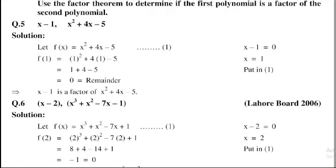Question number 6: x minus 2, and x³ plus x² minus 7x minus 1. So first of all, let's suppose f(x) equals x³ plus x² minus 7x plus 1, that is equation number 1. Since x minus 2 equals 0, this implies that x is equal to 2. Put in equation 1.